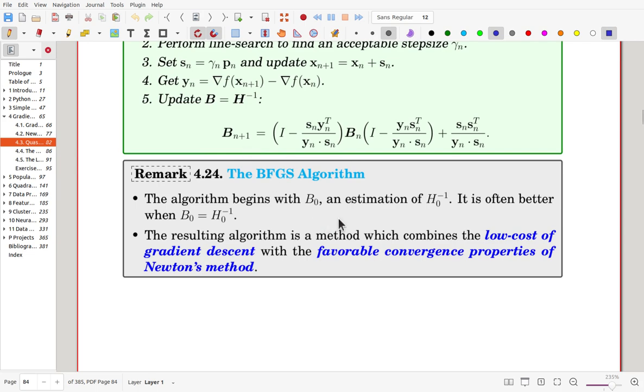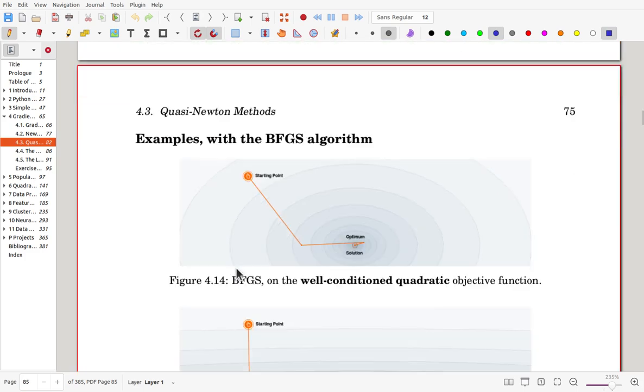The resulting algorithm is a method which combines the effectiveness of gradient method with the variable convergence speed of Newton's method. So each iteration is inexpensive, and number of iterations is not so large, more or less around that of Newton's method.